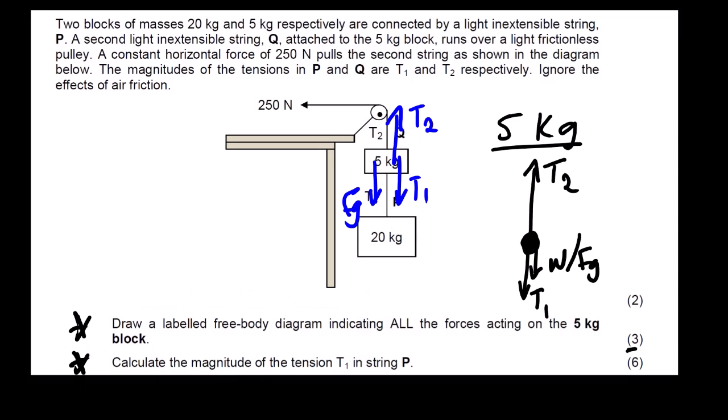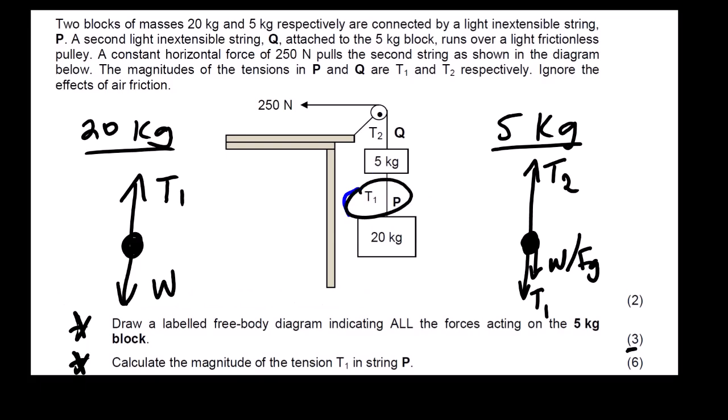Now let us look at the 20 kg block. It's a dot and then we have T1 and weight. So you only have two forces acting on this block. Now going to our next question, it's saying calculate the magnitude of tension T1 in string P. So we are looking for T1. Looking at the mark allocation, you can see that our steps will be a bit longer, but it's simple, it's not difficult.